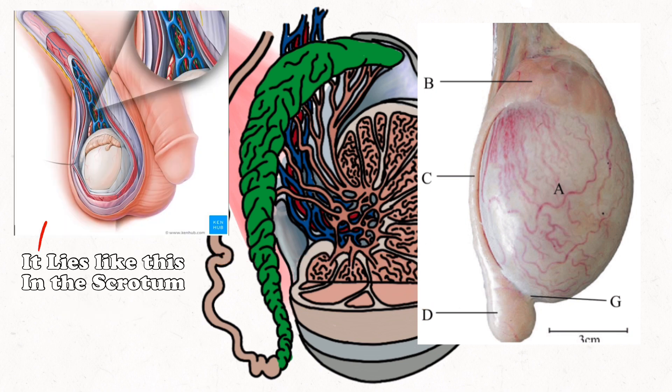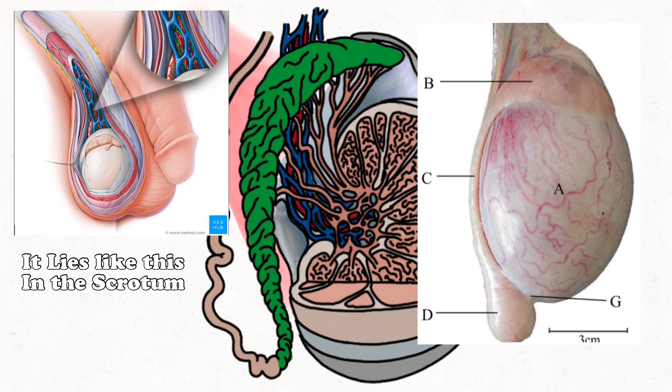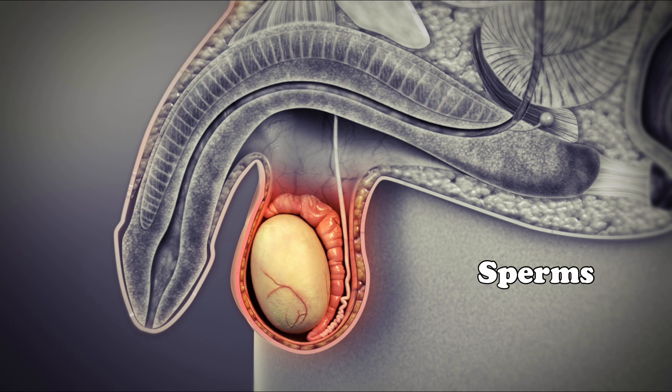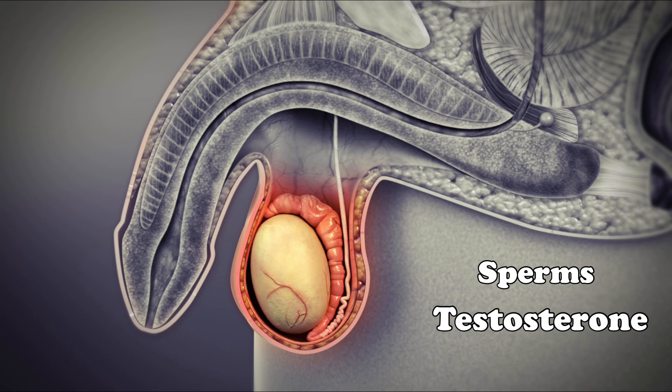Due to this orientation of the testes, the testes never rotates normally. The testes is the primary sex organ of the male, which produces firstly sperms and secondly testosterone.